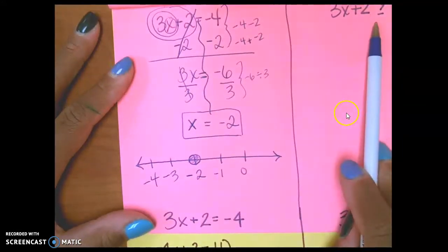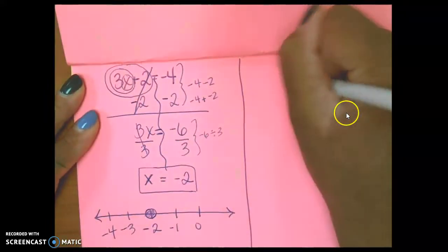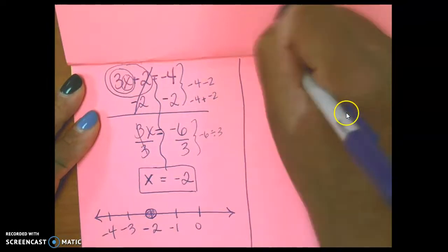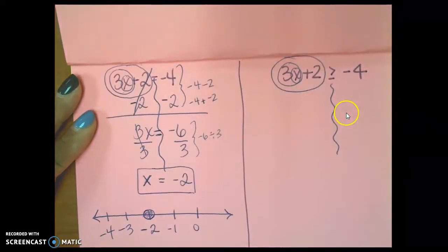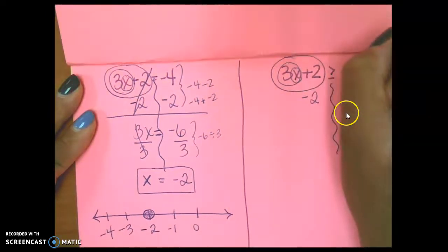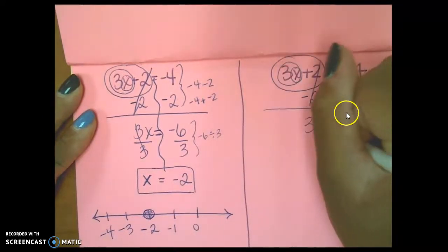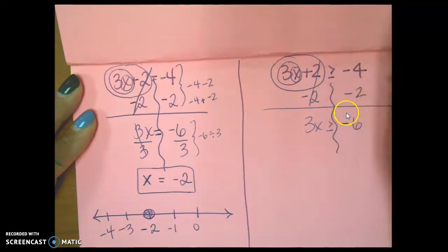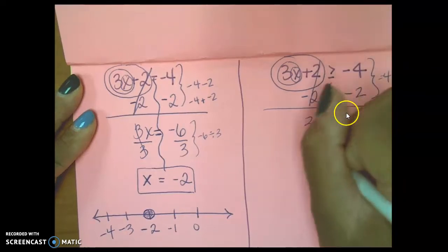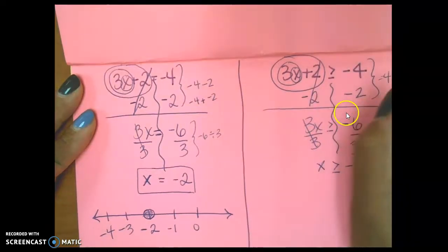Same steps over here. Eventually, I want you to get to the point where you don't have to draw the river and make your onion. I want you to be able to just do it like a habit and subtract 2 first, then divide by 3. So, minus 2, minus 2. The 2's cancel out. 3x is greater than or equal to. Negative 6, because this is negative 4, minus 2. Divide by 3, divide by 3, divide by 3, cross it out. x is greater than or equal to negative 2.